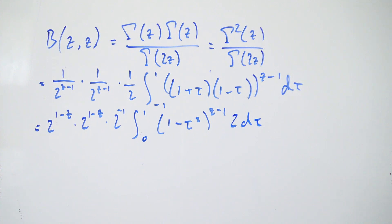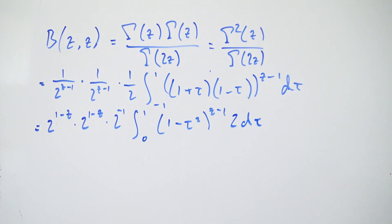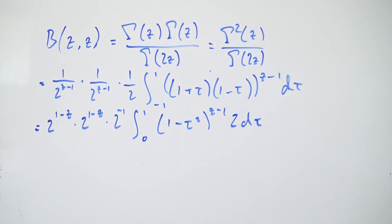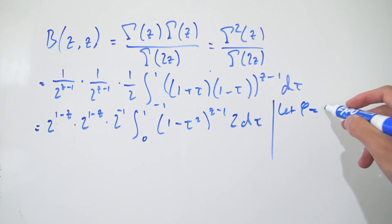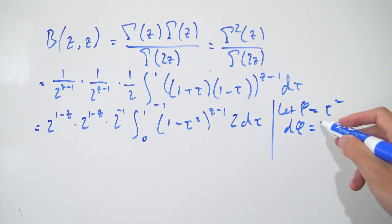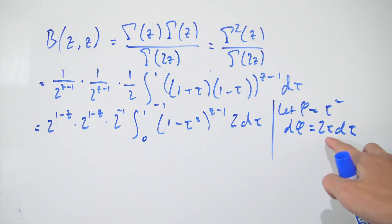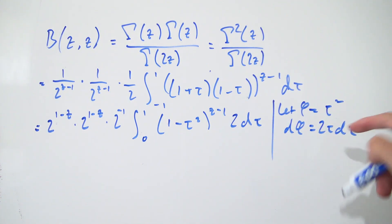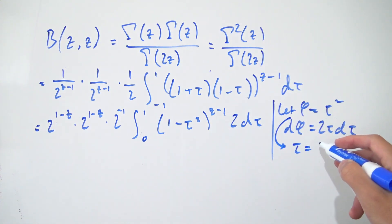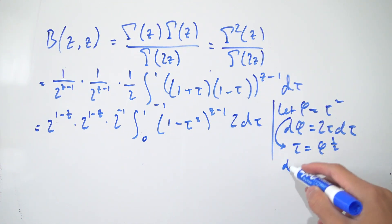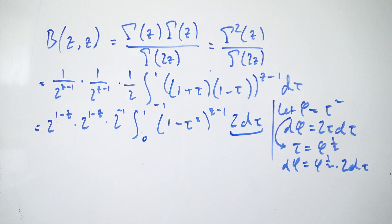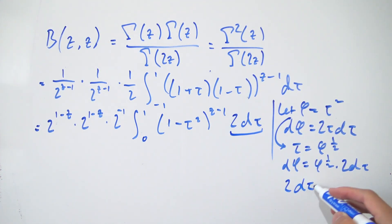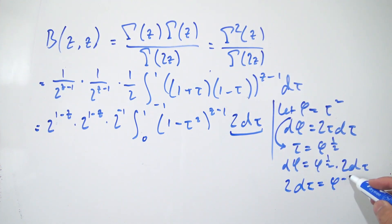Now I'll introduce another substitution: let phi equal tau squared. Differentiating both sides gives d-phi equals 2 tau d-tau. Since tau equals phi to the one half, we get d-phi equals phi to the one half times 2 d-tau, so 2 d-tau equals phi to the negative one half times d-phi.